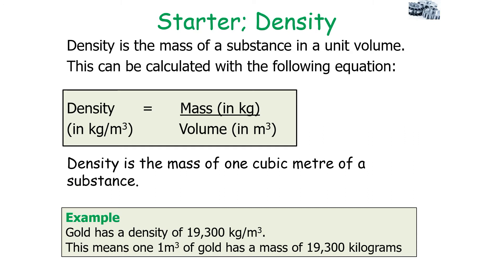We can consider density to be the mass of one cubic metre of a substance. For example, gold has a density of 19,300 kilograms per metre cubed. This means that if you have one metre cubed of gold, that would have a mass of 19,300 kilograms.